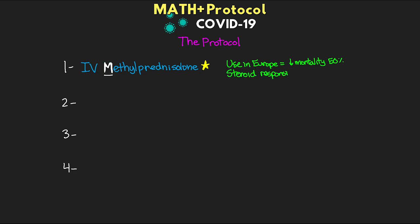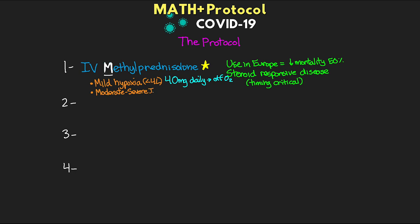This is a steroid-responsive disease, and timing is critical for effective use. There are many studies showing its effectiveness, and it's more potent when given IV. According to the protocol, dosing depends on the patient's severity. For mild hypoxia — less than four liters of oxygen — give 40 milligrams daily until off oxygen. For moderate to severe illness, give 80 milligrams as a bolus, then 20 milligrams every six hours IV push for seven days, with an alternate option of 80 milligrams a day for seven days. Starting day eight, switch to oral prednisone and taper over six days.